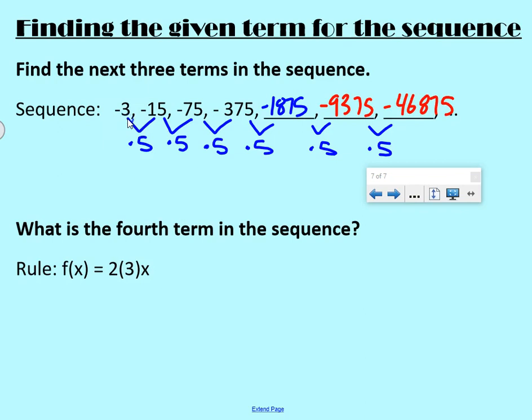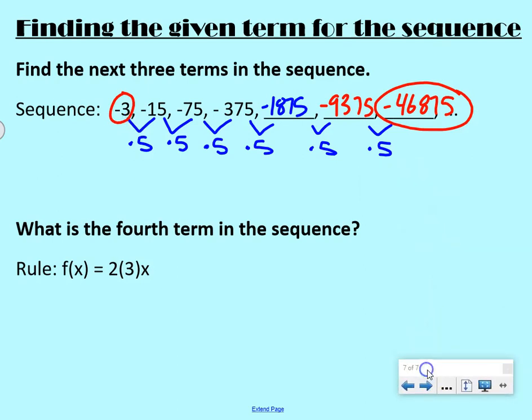So as you notice, these numbers get really big really fast. So we started at negative 3, and 1, 2, 3, 4, 5, 6 terms later, we're at negative 46,875. So we got big really fast. So that's what happens in geometric. You get bigger numbers faster.